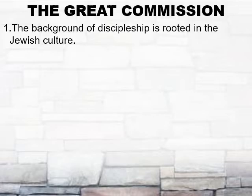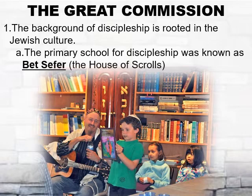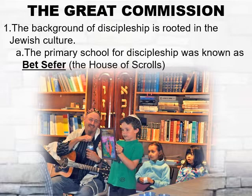The background of discipleship is deeply rooted in Jewish culture. There were three rabbinical schools a boy could attend in order to become a disciple of a rabbi, and hopefully one day a rabbi himself. The first was called Bet-Sephir. In Hebrew, the word 'Bet' means house and 'Sefer' means scrolls. Therefore, Bet-Sephir became known as the House of Scrolls.